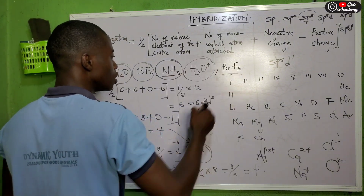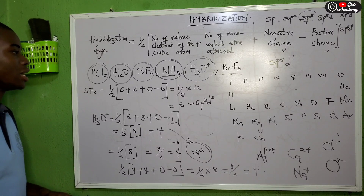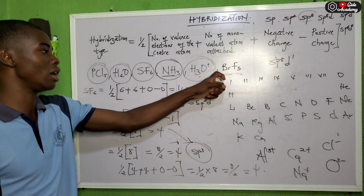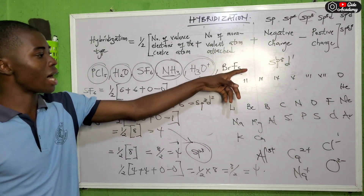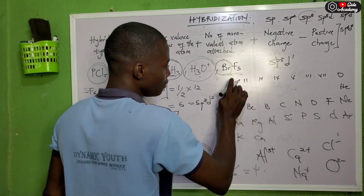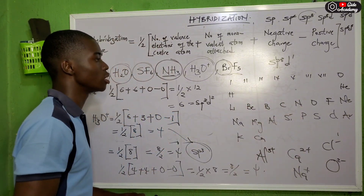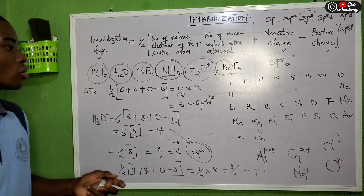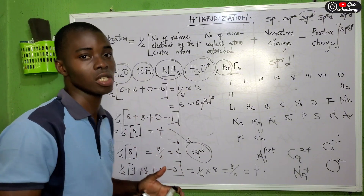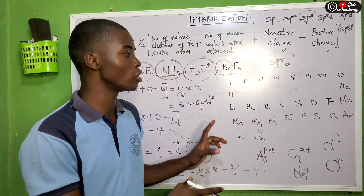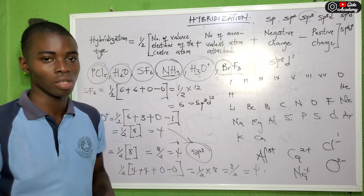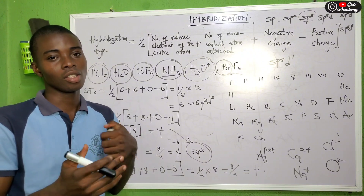Now I want everyone to try these two questions: What hybrid orbital does ammonia (NH3) belong to? And what hybrid orbital does BrF5 belong to? Please drop your answers in the comment section. Note that bromine is in group 5 in the periodic table, as is boron.